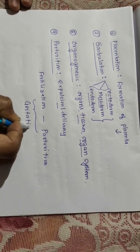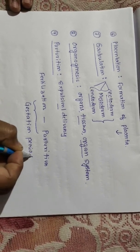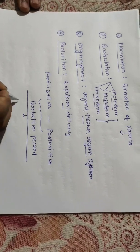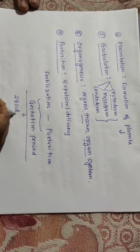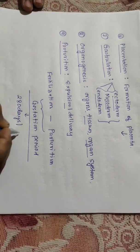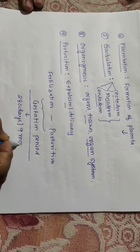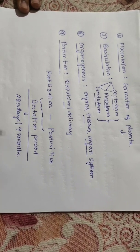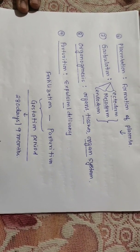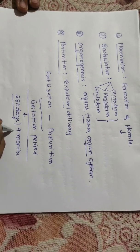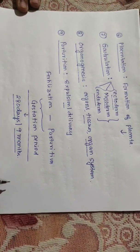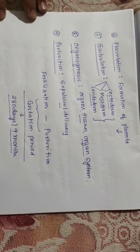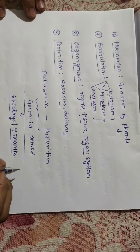This total duration or time span is known as the gestation period. In the case of human beings, the gestation period is about 280 days, or 9 months. That means for the total development of the baby from the time of fertilization up to delivery, it requires around 280 days or 9 months. This is called the gestation period.